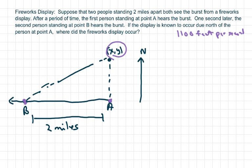Okay, so 1100 feet per second. So the person A is 1100 feet closer to the fireworks display than the person at point B. Since the distance from A, Y to A, and from A, X, Y to B is a constant 1100, the point lies on the hyperbola whose foci are at A and B.